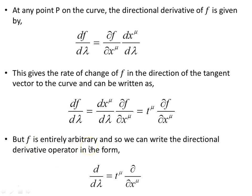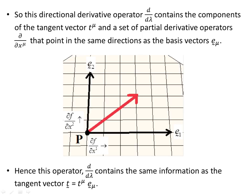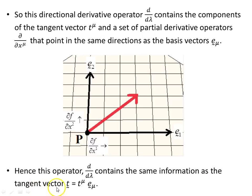Since f is entirely arbitrary, we can write the directional derivative operator in the form d/d lambda = T superscript mu times the partial derivative operator partial/partial x mu. The operator d/d lambda contains the components of the tangent vector T superscript mu and a set of partial derivative operators d/dx mu that point in the same directions as the basis vectors e subscript mu. So this operator d/d lambda contains the same information as the tangent vector T = T superscript mu times e subscript mu.